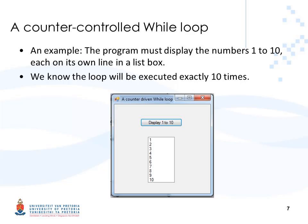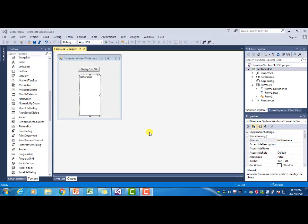In this video we are going to learn how to use a while loop. We're going to start by writing a very simple counter-controlled while loop. What this program does is display the numbers 1 to 10, each on its own line in a list box. We know beforehand that the loop will be executed exactly 10 times, so we can implement it as a counter-controlled loop.